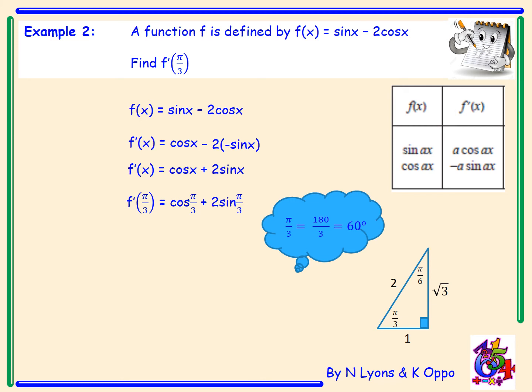We use exact value triangles — I remember them in degrees then convert to radians. For the 60-30-90 triangle, relabelled as π/3, π/6, 90°, with hypotenuse 2, sides 1 and √3. So f'(π/3) = cos(π/3) + 2 sin(π/3) = ½ + 2 × (√3/2). The 2s cancel, giving f'(π/3) = ½ + √3. That's the exact value.